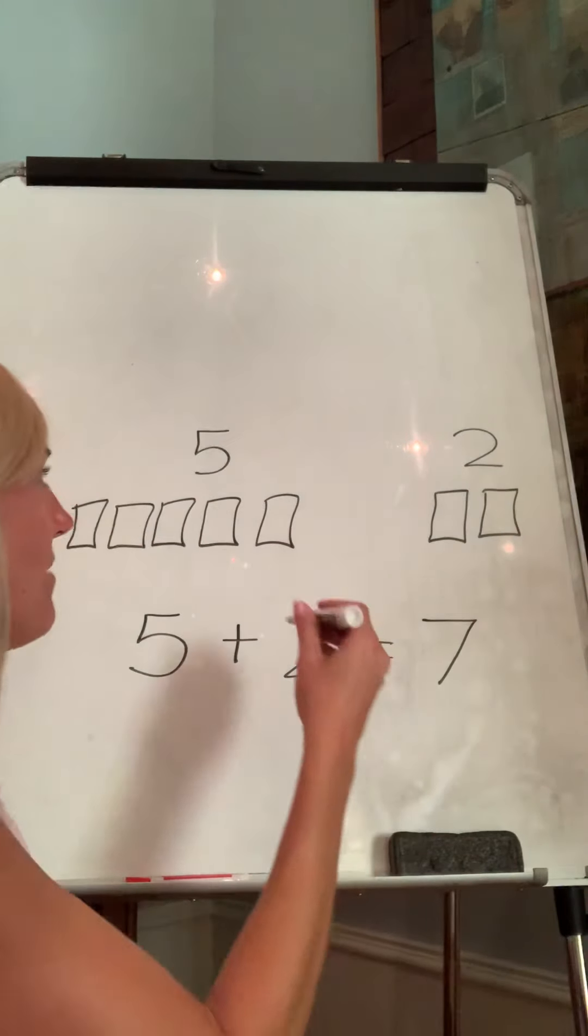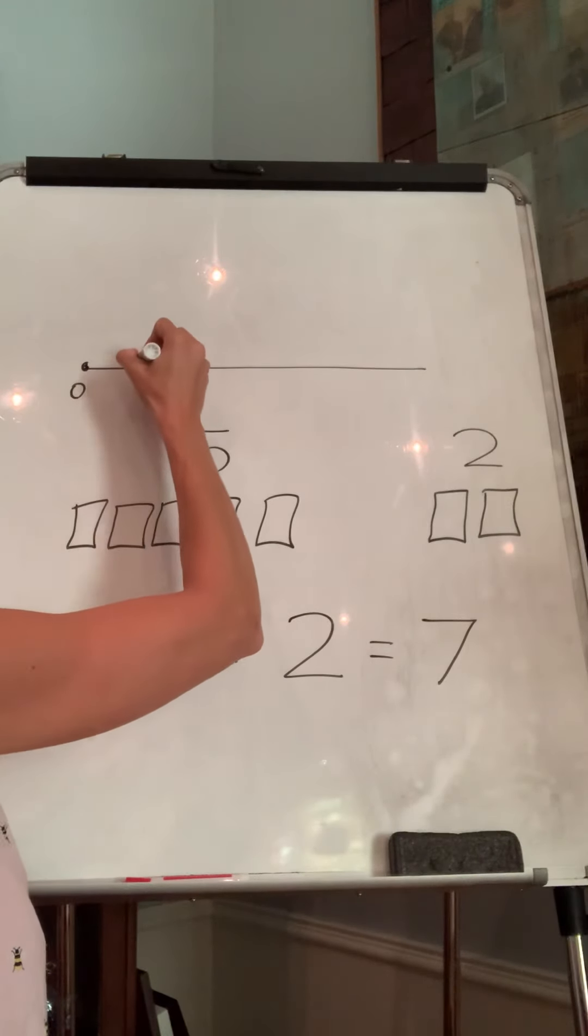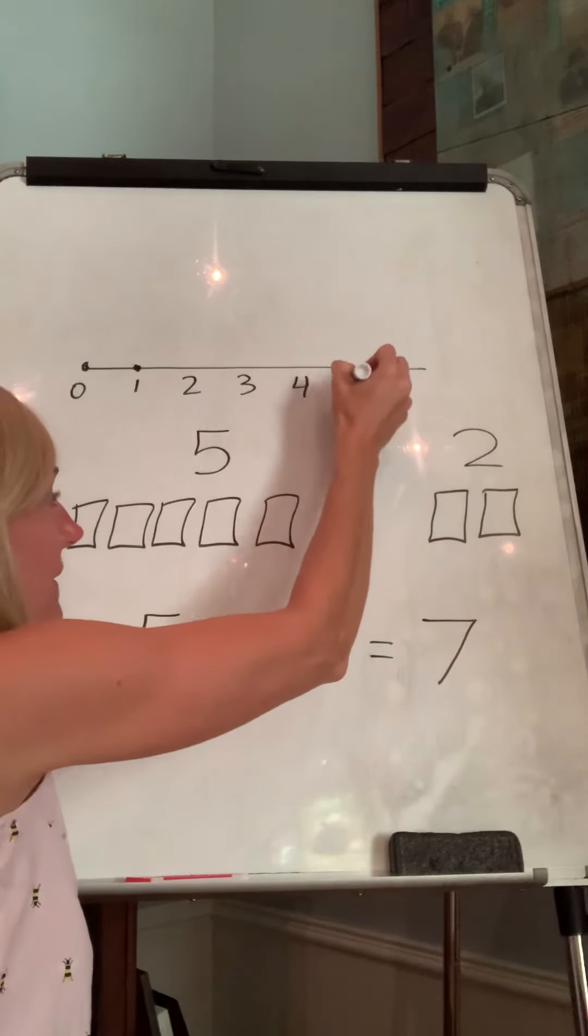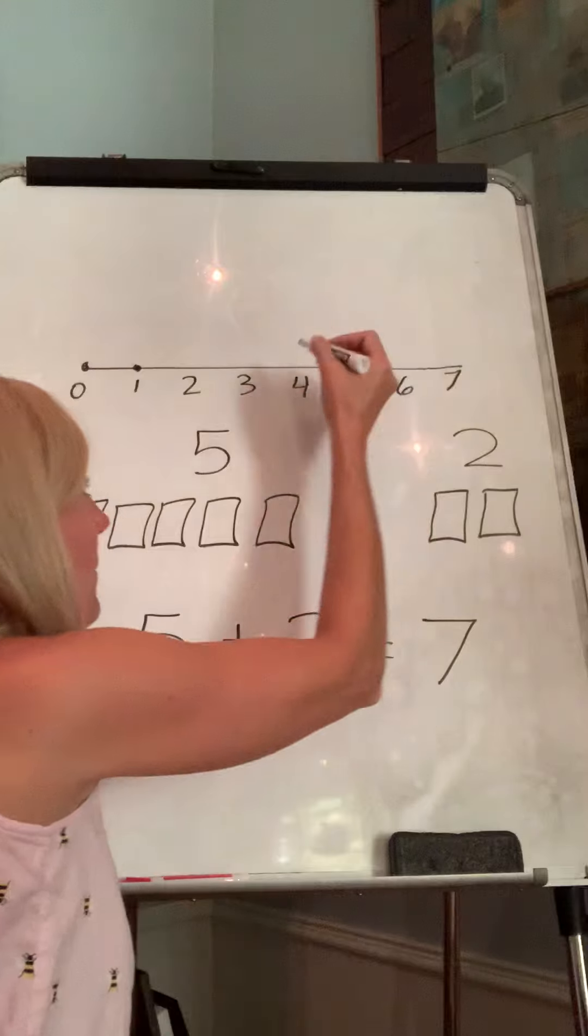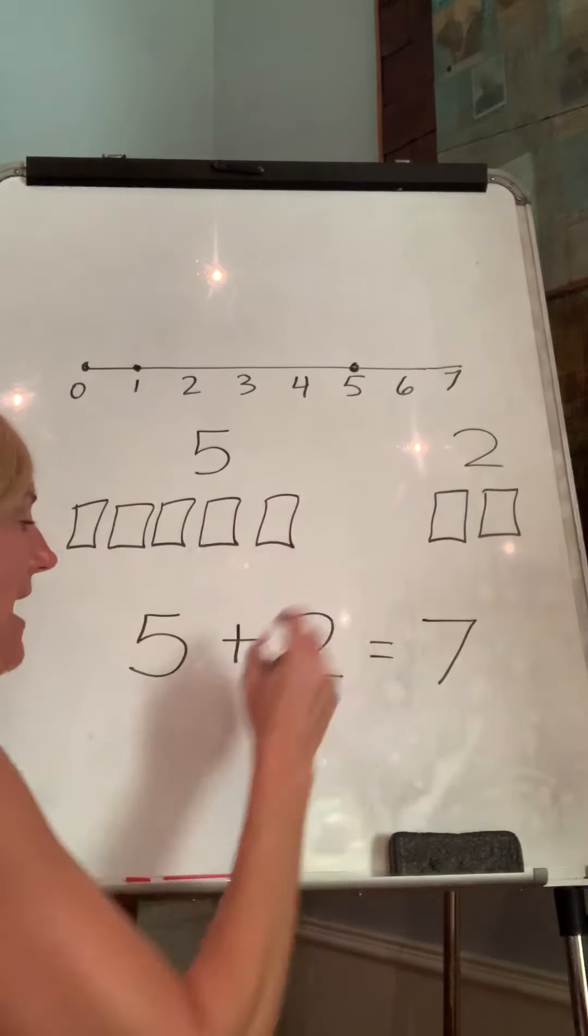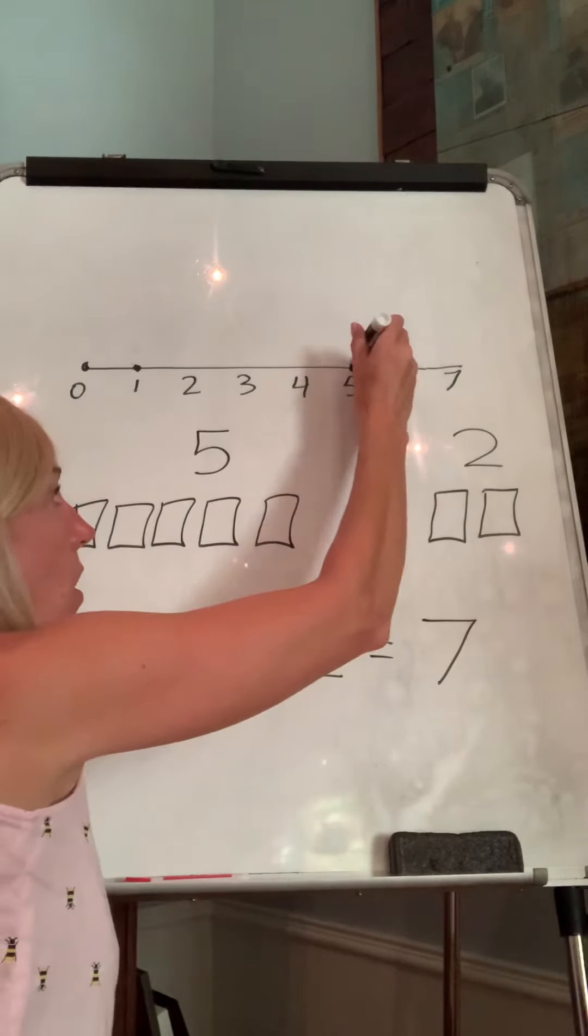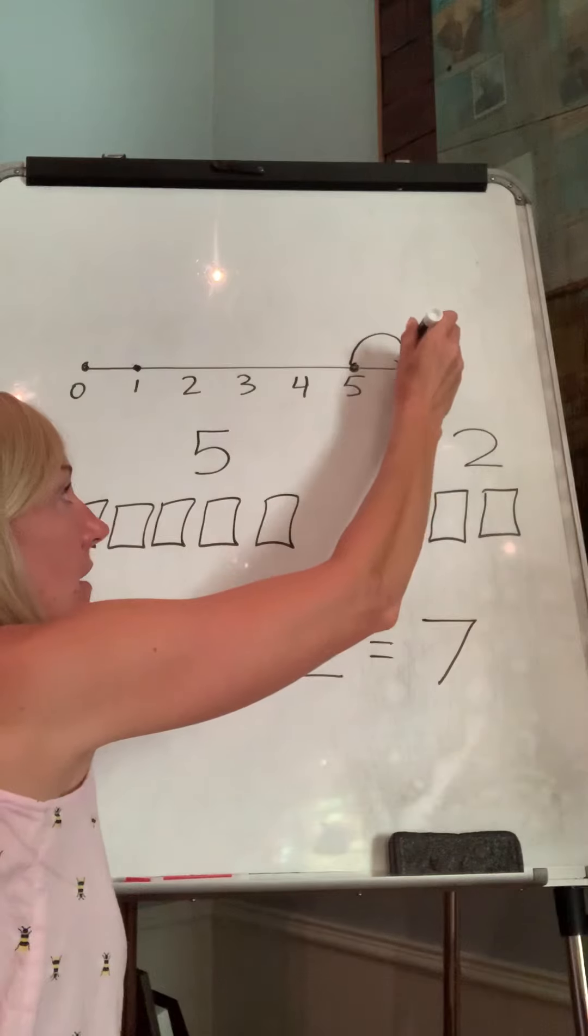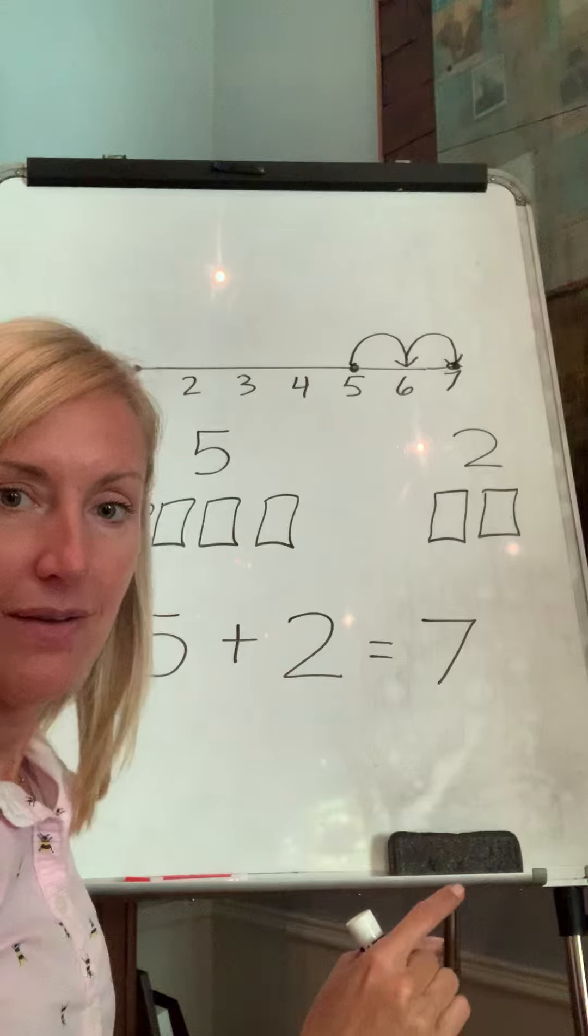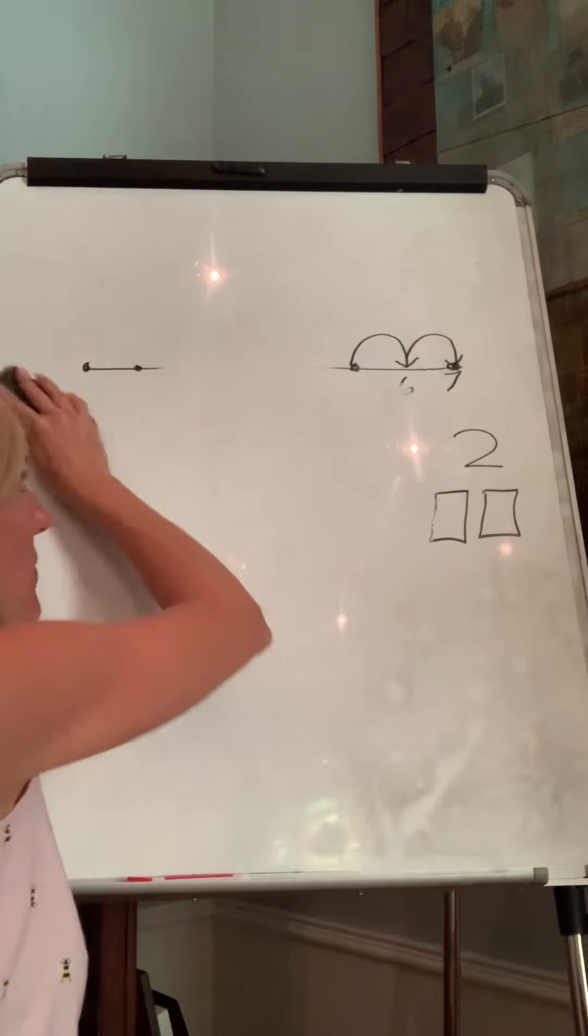Okay, if you're using your number line, zero, one, two, three, four, five, six, seven, it would look like this. We'd start at five, and then we're going to hop forward because we're plus, we're getting bigger, two hops. One, two. And where did we end? At seven. Okay, so these are all strategies that are things that you can try to solve the problem.